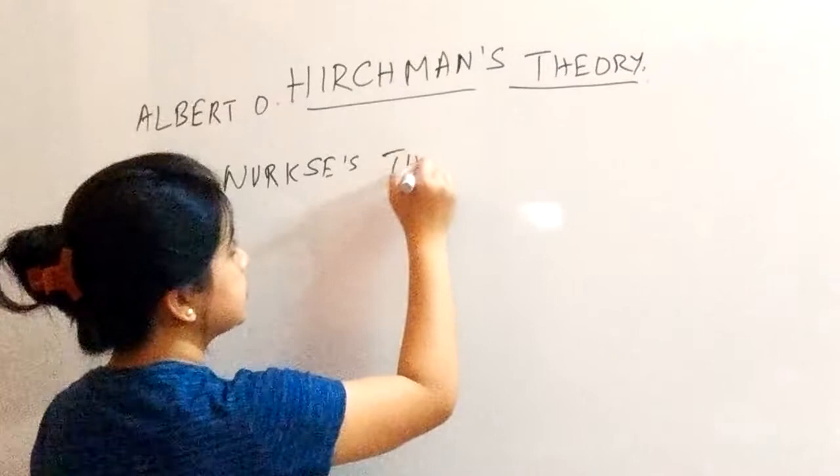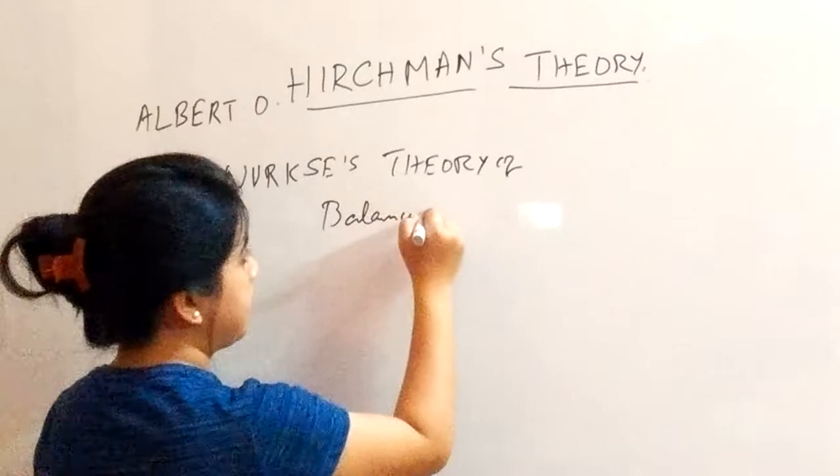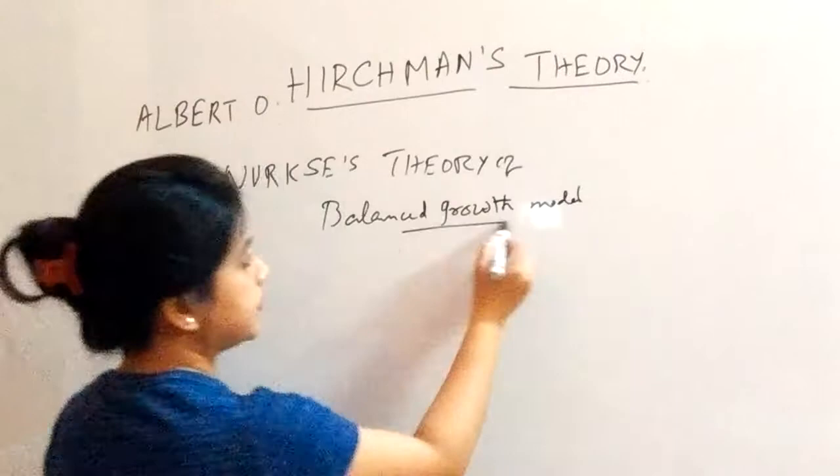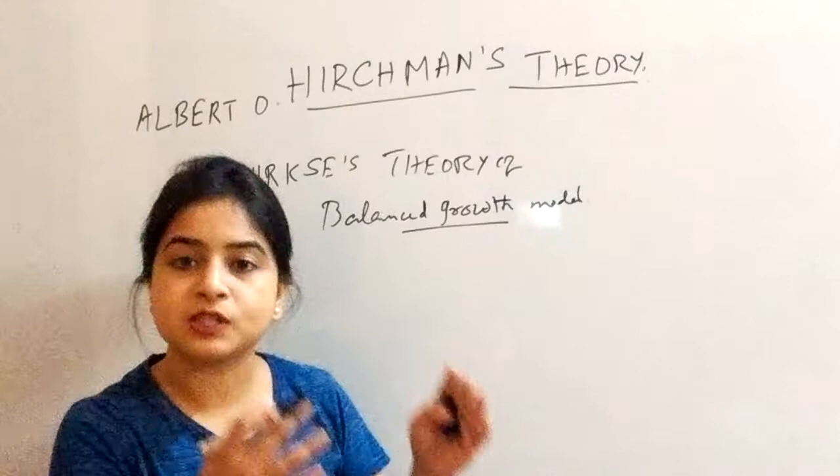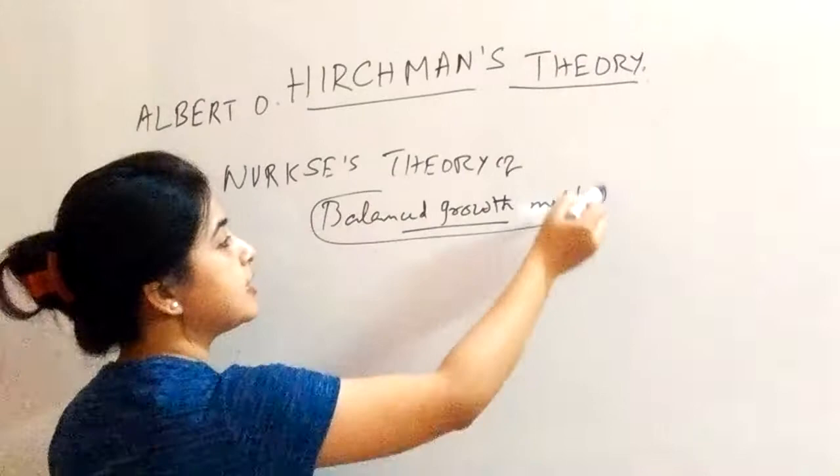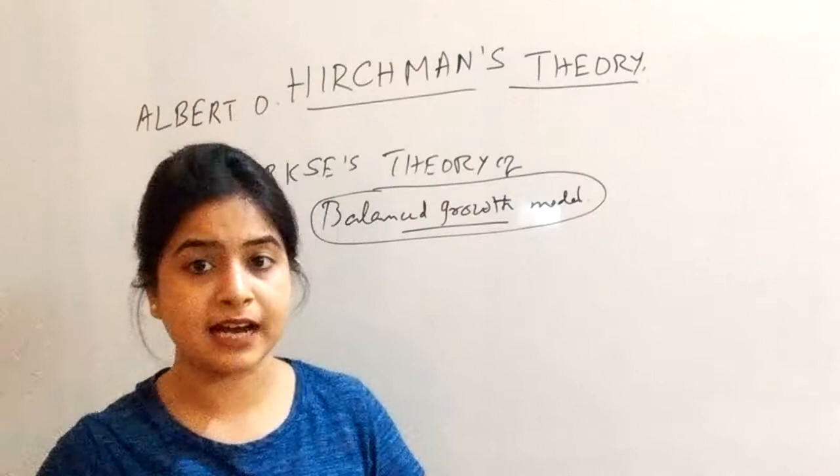Nurkse's theory of the balanced growth model. This is based on Hirschman's theory, from the perspective of the balanced growth model. So first of all, we have to understand what the balanced growth model is actually about, because based on that we can move into Hirschman's theory.